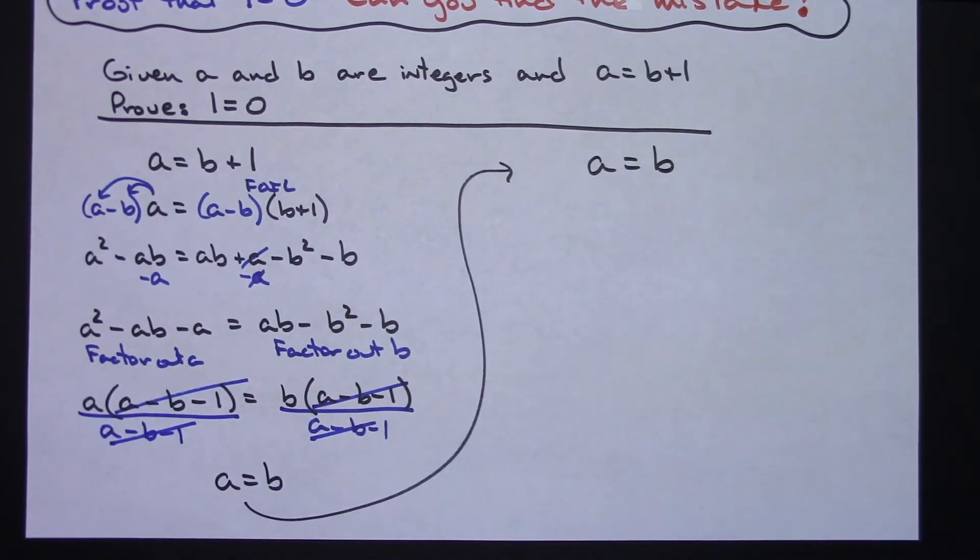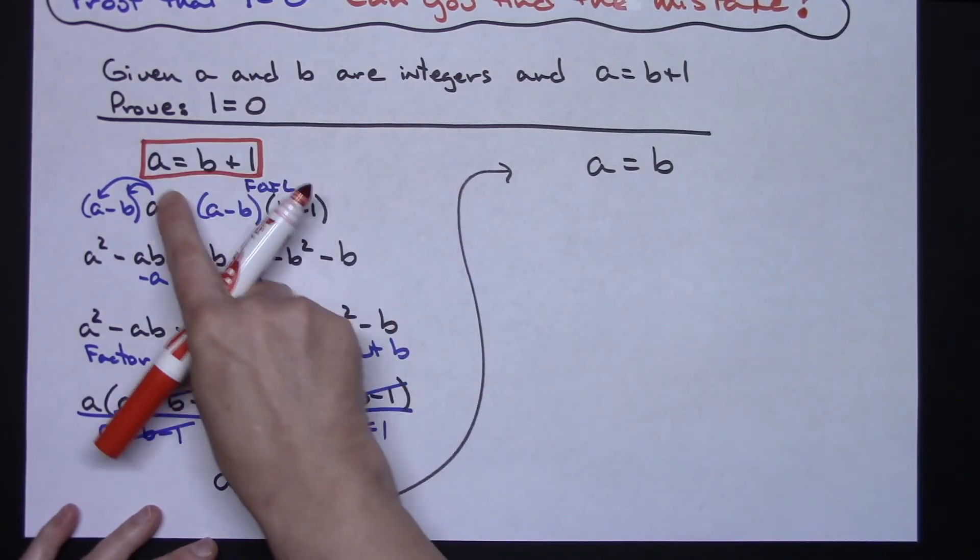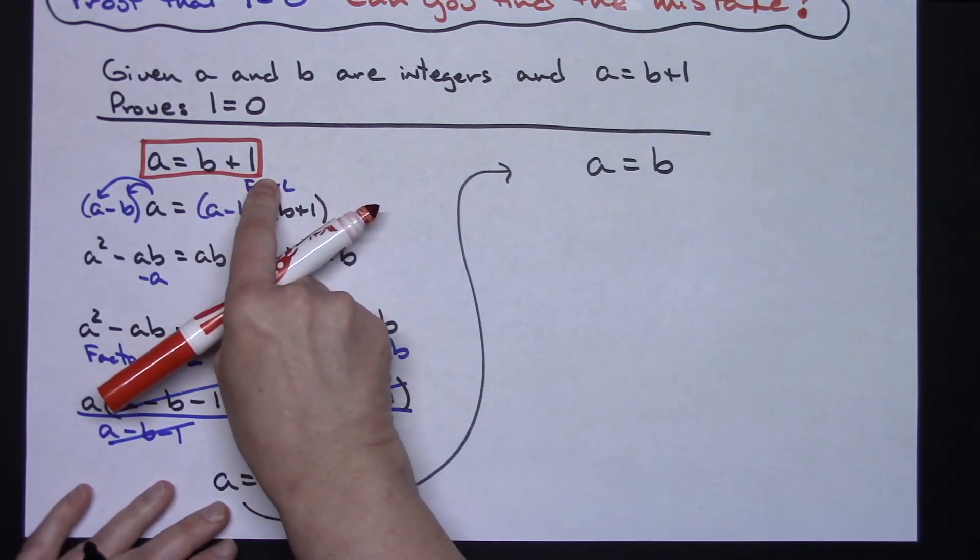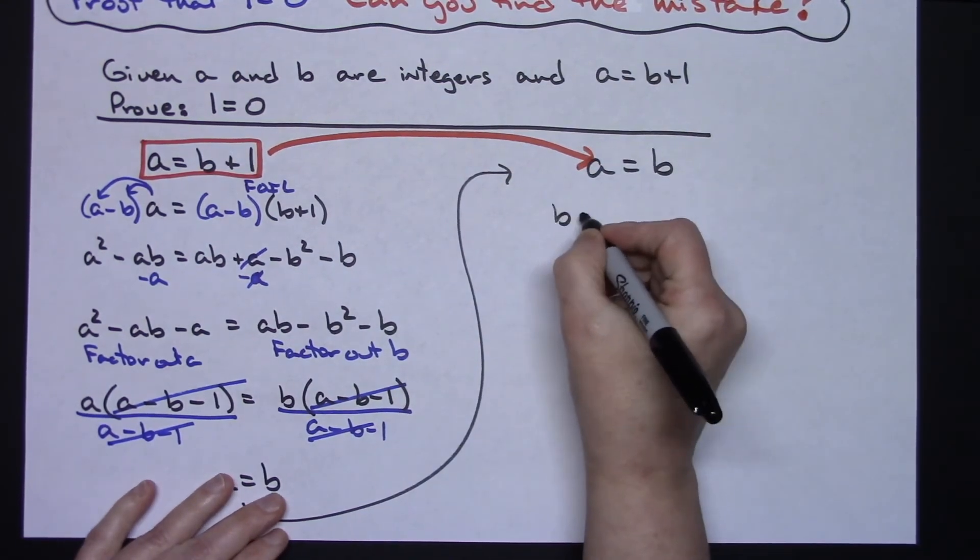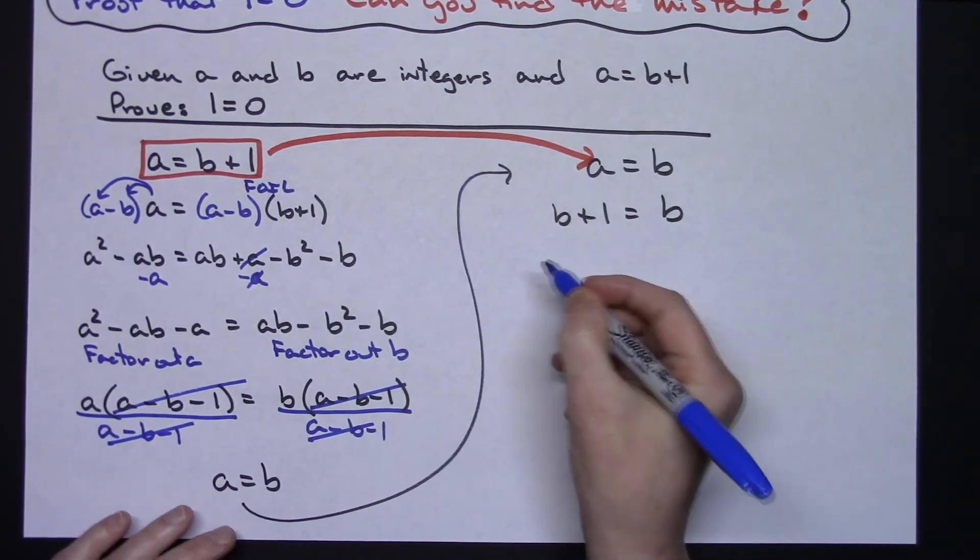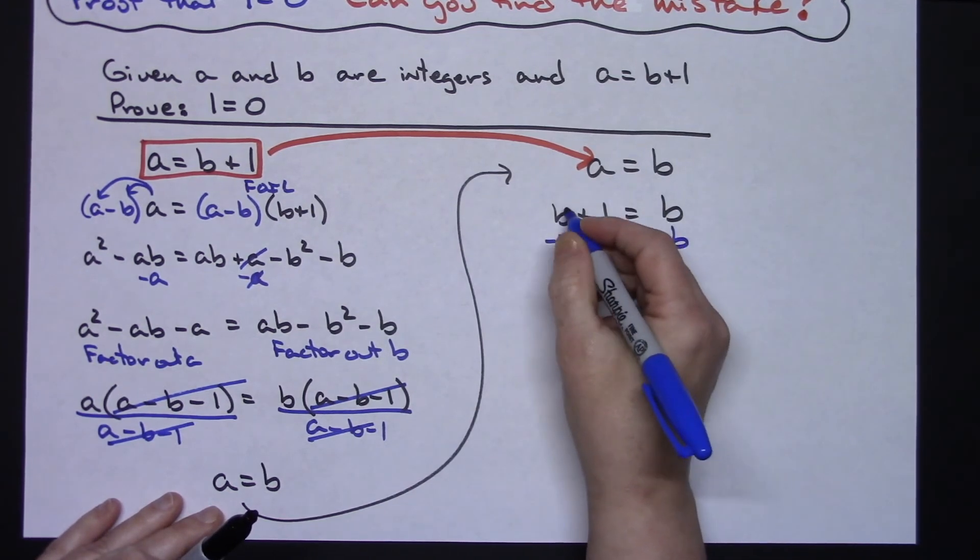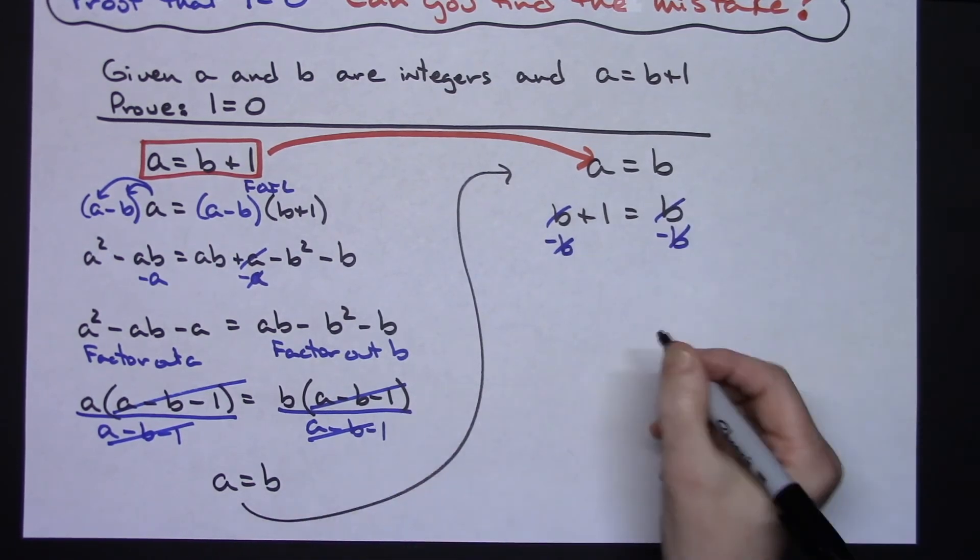Now I'm going to come back over here to my original given statement. My original given statement said that a is equal to b plus 1, so then what I'm going to do is I'm going to choose to substitute b plus 1 for my a. So I'm going to have b plus 1 equals b. Now I'm going to choose to subtract b from both sides of the equation. B minus b over here is going to fall out, b minus b over here is also going to fall out, or in other words leave me with 0. So therefore 1 equals 0.